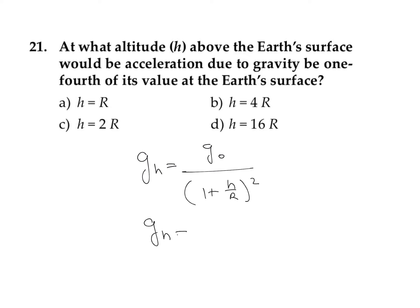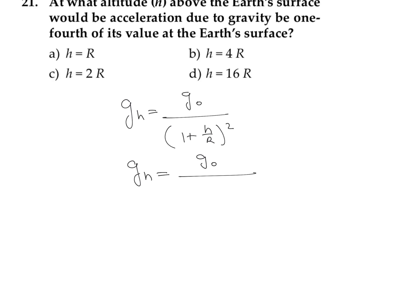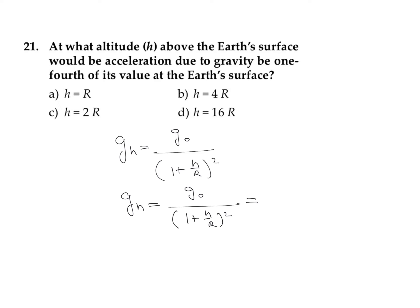So g at height h equals g0 divided by (1 plus h divided by R) whole square, which is given as g0 divided by 4.